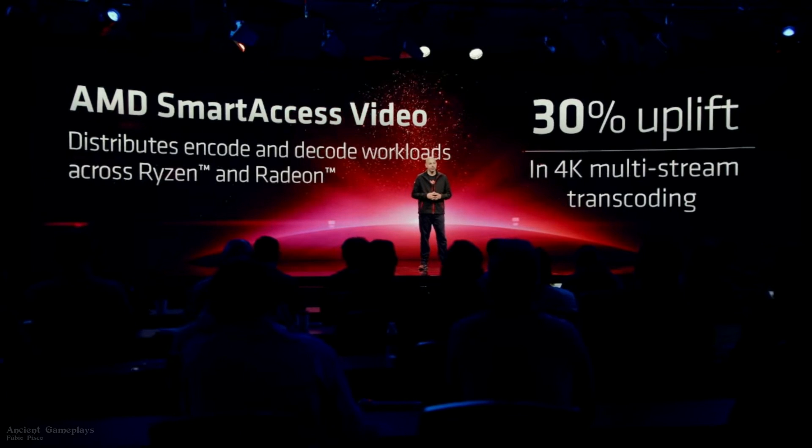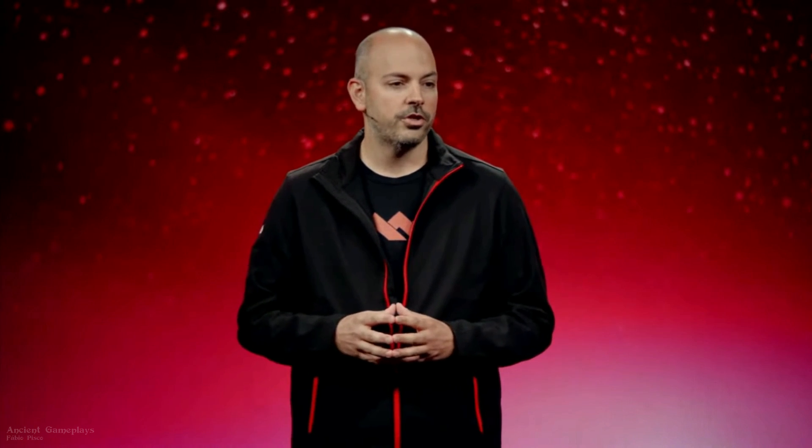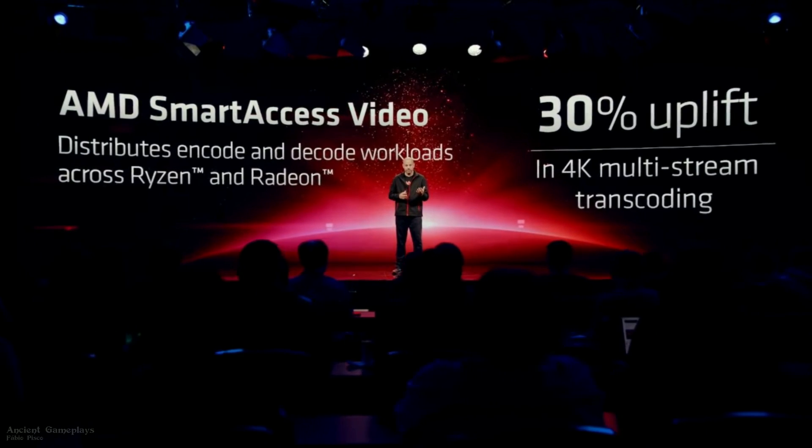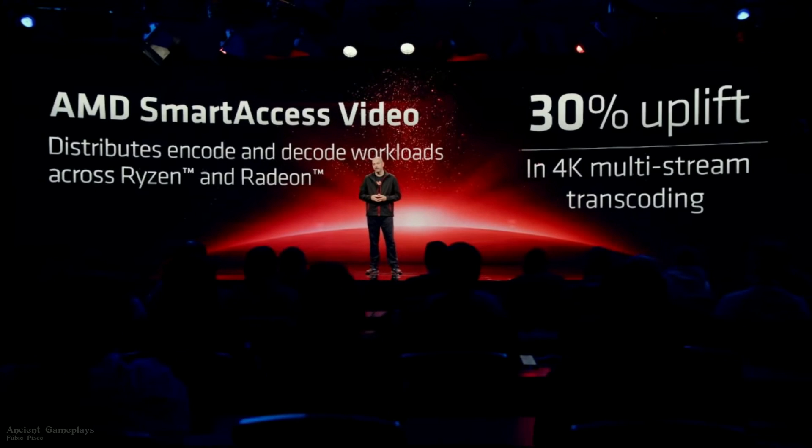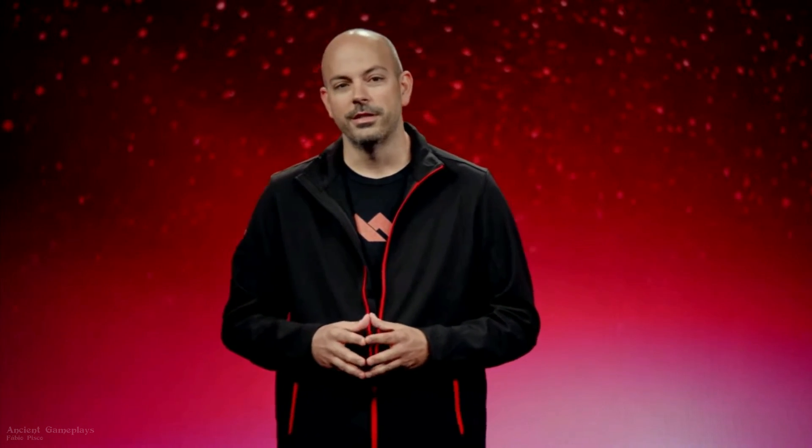AMD Smart Access Video works with select applications when you pair a Ryzen 7000 series CPU with a Radeon 7000 series GPU. Unlike other platforms that can only use either the CPU or GPU's video compression engines, Smart Access Video distributes encoding and decoding workloads across both Ryzen CPU and Radeon GPU compression engines — enabling faster 4K and 8K editing. For batch transcoding, it reduces parallel transcoding times by nearly one third. It will be available in apps like OBS, Premiere Pro, FFMPEG, and more. A great feature for video creators, though limited to Ryzen 7000 and RX 7000 series.